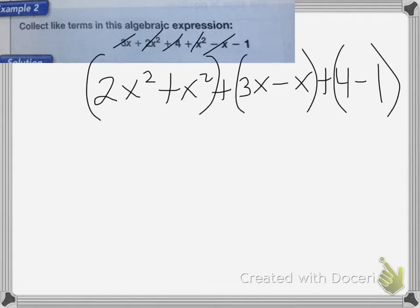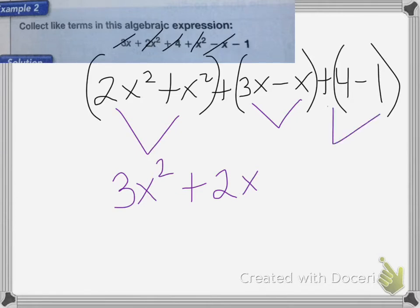Now I'm going to solve these. If I have 2x squared and I add another x squared, that's going to be 3x squared. Plus the 3x minus x, so I'm taking an x away, that's going to equal 2x. And then the 4 minus 1 is equal to 3, so it's going to be plus 3.